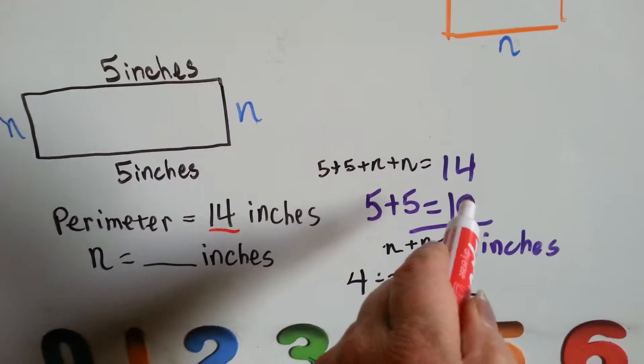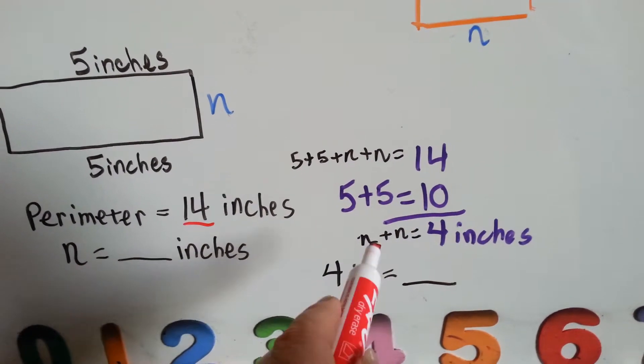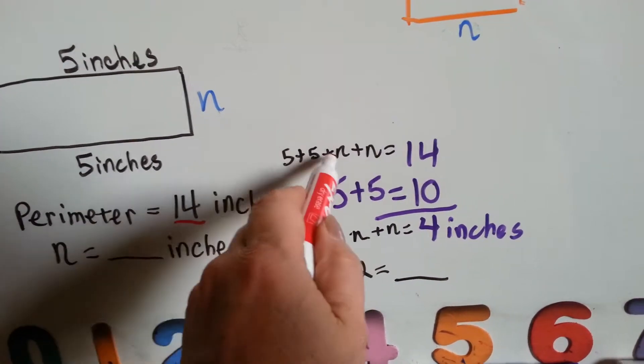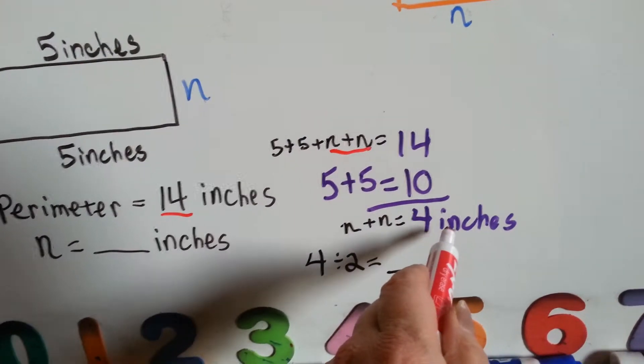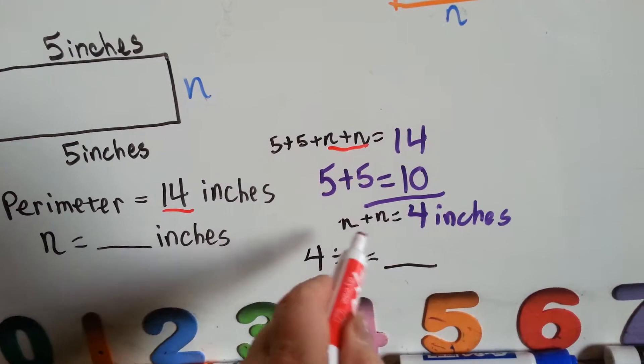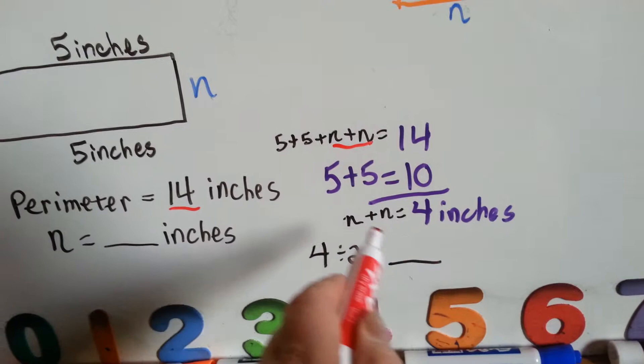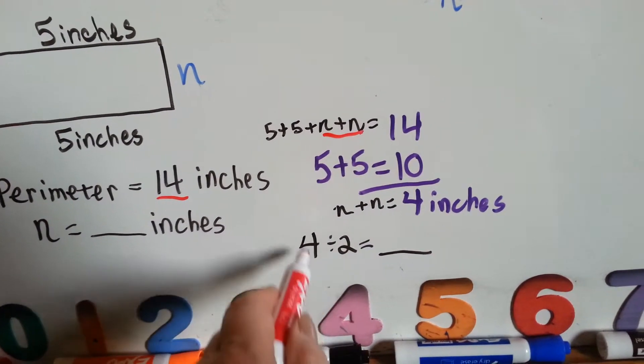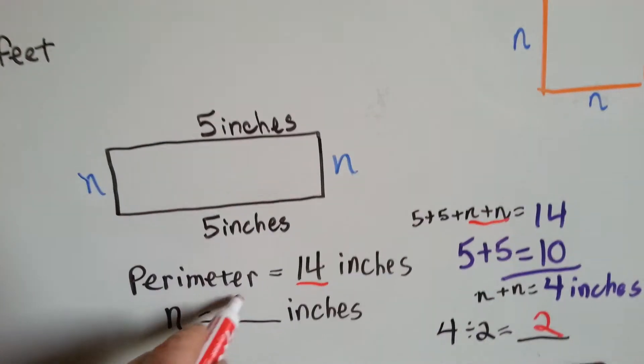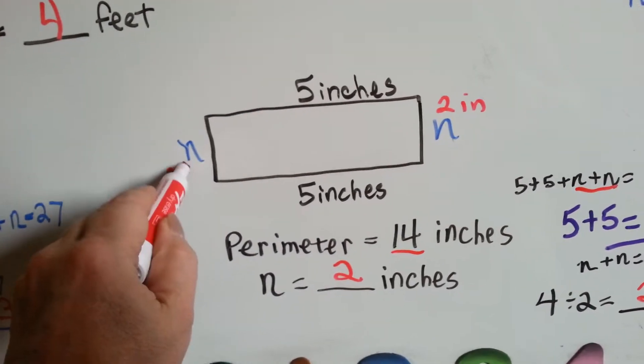Well, 5 and 5 is 10. So if we have the 14 and take the 10 away, that's going to leave 4 inches left over. That means the n plus the n part of this must be 4 inches. So what we do is, since there's 2 of them here, 2 n's, we're going to divide the 4 inches into 2 numbers. 4 divided by 2 is 2. That means that each side must be 2 inches.